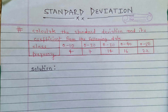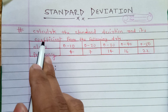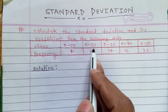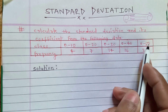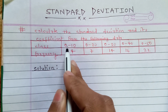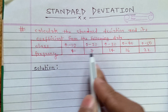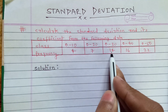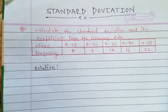Hello friends, today I am going to teach you about standard deviation and its coefficient. If the class is given as 0 to 10, 0 to 20, 0 to 30, 0 to 40, 0 to 50, and the frequency is given as 7, 14, 16, 22, then how can we solve this type of standard deviation problem?